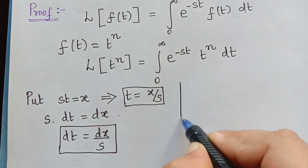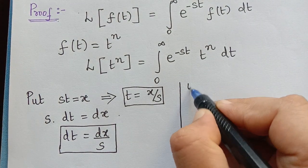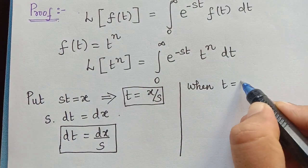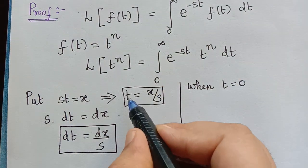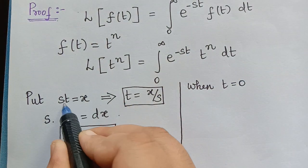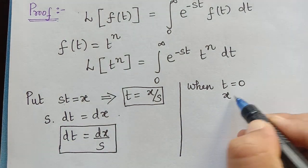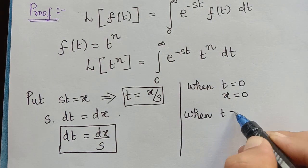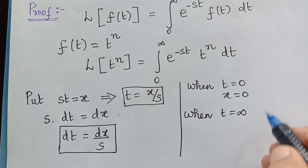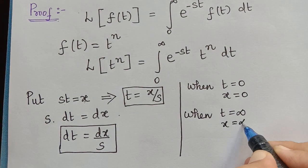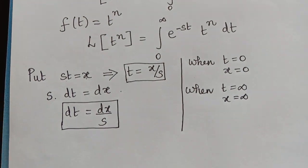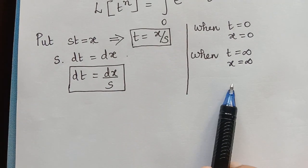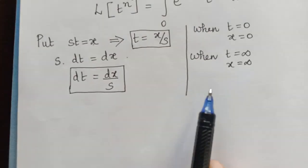Whenever we make a substitution we should also check the limits. When t equals 0, x is also 0, and when t equals infinity, x is also infinity. So in this problem there is no change of limits — the limits remain the same. However, it is always advisable to check the limits whenever we make a substitution, because for some problems the limits may change.